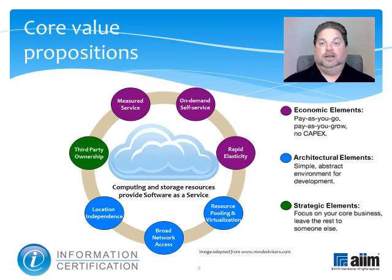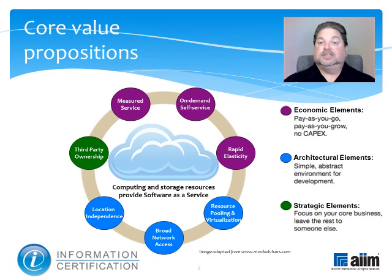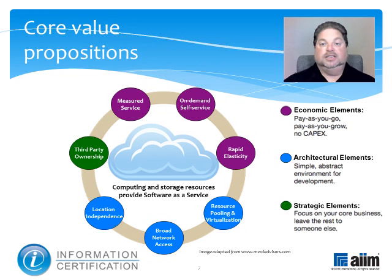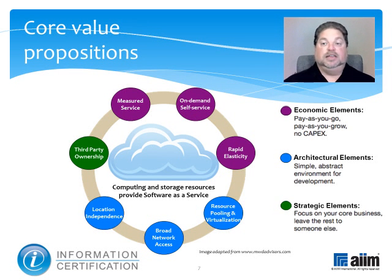Resource pooling and virtualization is another advantage. Cloud computing resources are pooled to serve multiple consumers with different physical and virtual resources dynamically assigned and scaled elastically according to consumer demand. Virtual slices of resources are created from clusters of servers and storage devices in the cloud, perfectly sized to fit the specific needs of multiple users. Examples of resources include storage, processing, memory, and network bandwidth. Broad network access is yet another plus — cloud capabilities are available over the network and accessed through standard mechanisms that promote use by heterogeneous thin or thick client platforms, like mobile phones, tablets, laptops, and workstations. And last on this list is location independence: the customer generally has no control or knowledge over the exact location of the provided resources, but may be able to specify location at a higher level of abstraction — by country, state, or data center.